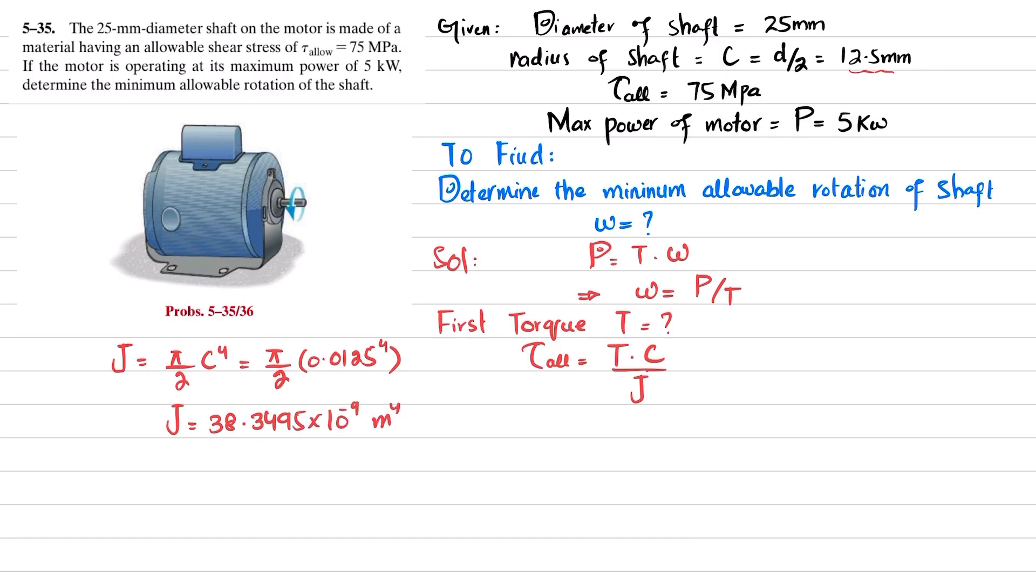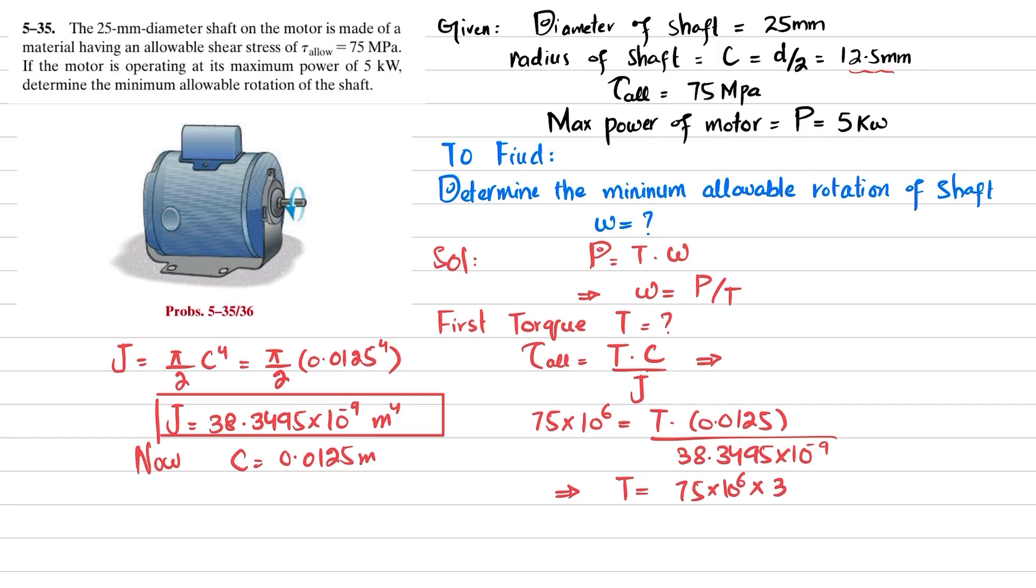Now c is equal to 0.0125 meters, and torque is also available, so you can just put it in this formula. The maximum allowable shearing stress is 75 megapascals, so 75 times 10 raised to power 6 is equal to torque times 0.0125 divided by 38.3495 times 10 raised to power minus 9. From here you will get torque T is equal to 75 times 10 raised to power 6 times 38.3495 times 10 raised to power minus 9 divided by 0.0125.